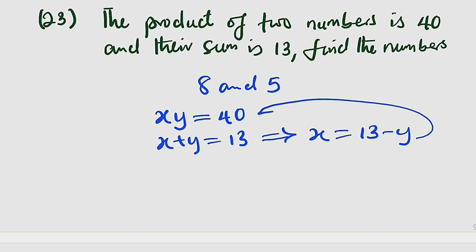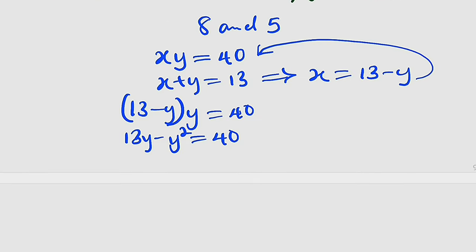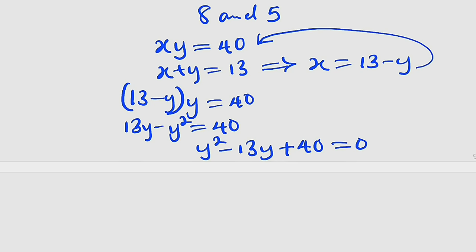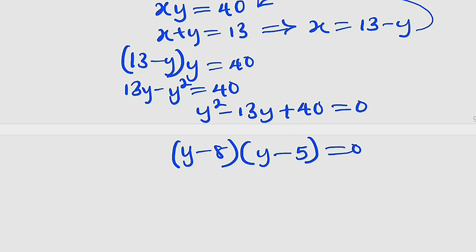Plug this equation into the product equation: wherever you have x, replace it with 13 minus y. So (13 minus y) multiplied by y equals 40. Expanding: 13y minus y² = 40. Taking every term to the right hand side: y² minus 13y plus 40 = 0. We think of two numbers that multiply to get 40 but add to get negative 13 — those are negative 8 and negative 5 — giving (y minus 8)(y minus 5) = 0.